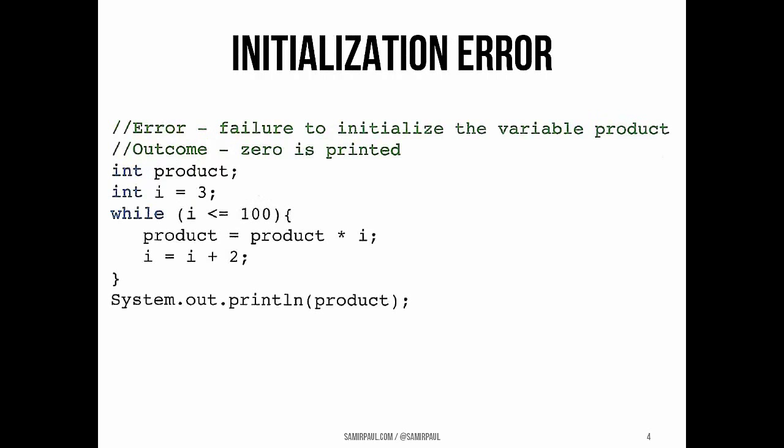Okay. So first potential error, maybe you make a mistake in the initializing statements. So maybe you forgot to initialize the variable product so it gets its default value 0. Here, that's what's happening with product. Product starts as 0. And every time we multiply product by i, we get 0 over and over again. As you can probably predict, at the end when we print out our final value, you're going to see 0 instead of the actual number.